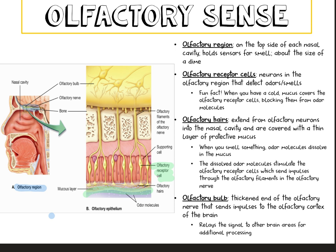The olfactory hairs extend from the olfactory neurons into the nasal cavity and are covered with a thin layer of protective mucus. When you smell something, odor molecules dissolve in the mucus, and those dissolved odor molecules stimulate the olfactory receptor cells, which send impulses through the olfactory filaments in the olfactory nerve. There is always that mucus layer, though its thickness varies depending on whether someone is sick or not.